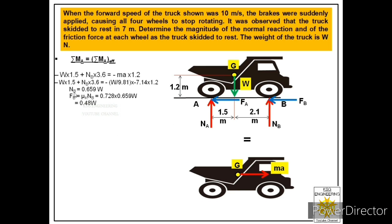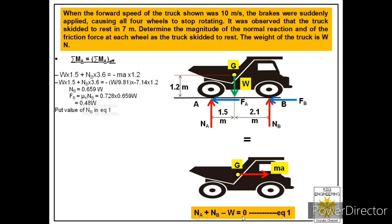NB = 0.659W is the normal reaction for both front wheels, and FB = 0.48W is the friction force for both front wheels. Substituting NB into Equation 1 (NA + NB − W = 0), we calculate NA = W − 0.659W = 0.341W. So NA = 0.341W is the normal pressure for both rear wheels.